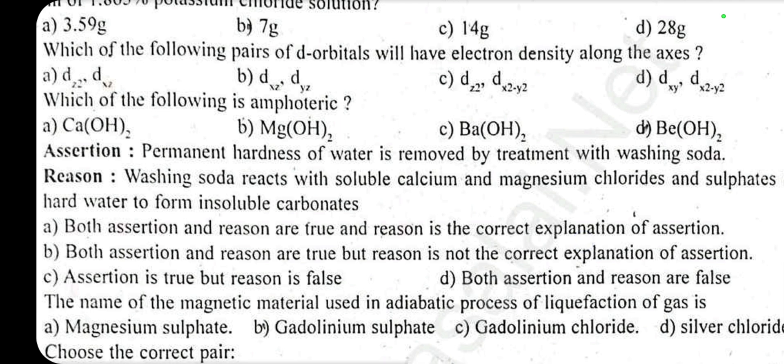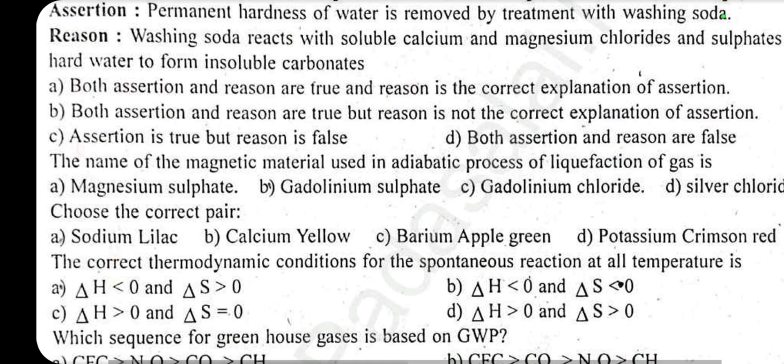Permanent hardness of water is removed by treatment with washing soda — assertion and reason. Washing soda reacts with soluble calcium and magnesium chlorides and sulfates in hard water to form insoluble carbonates. Answer A is correct: both assertion and reason are true, and reason is the correct explanation of assertion.